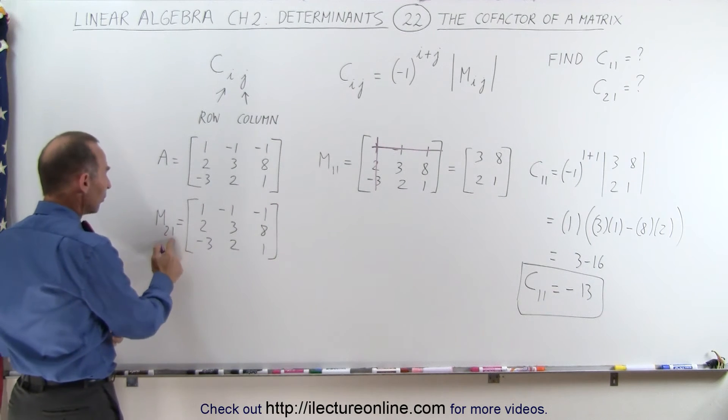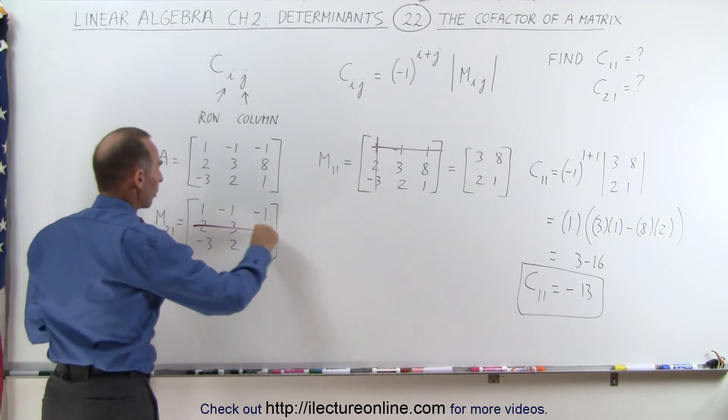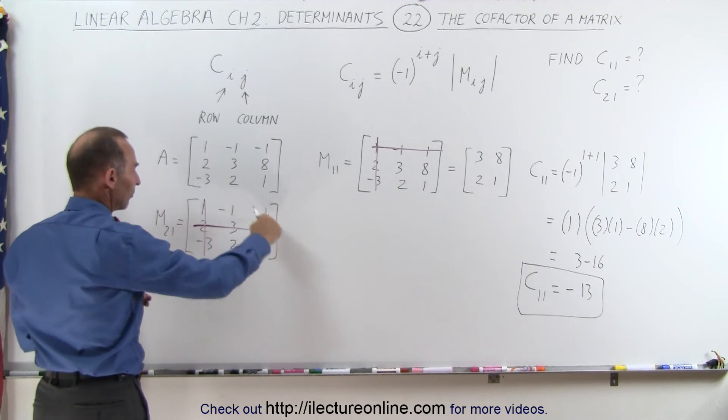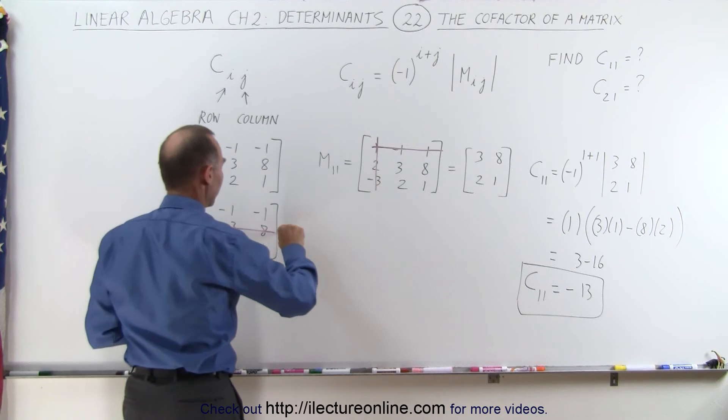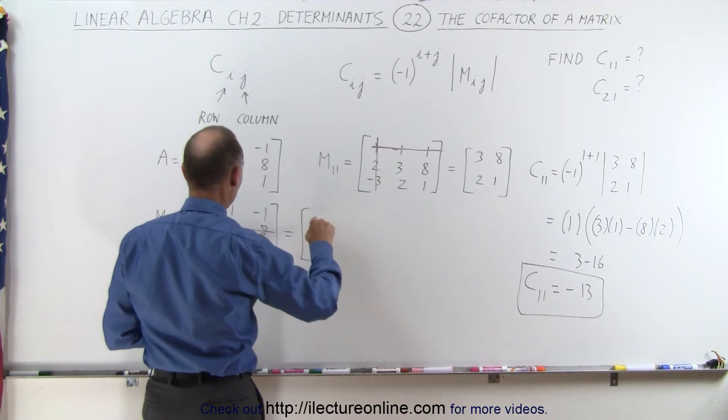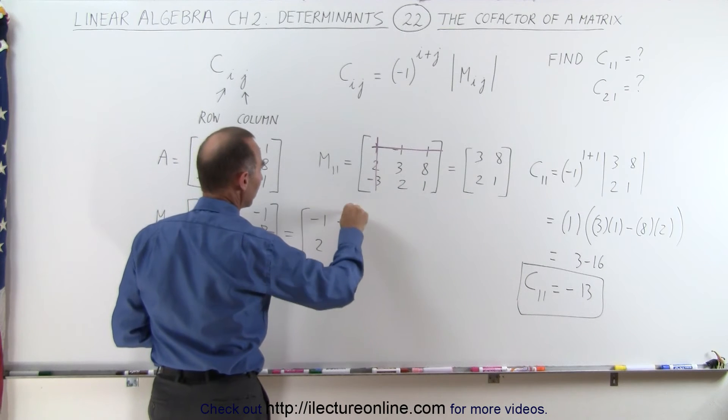Let's get rid of the second row and the first column, second row, first column, you're left with these four elements, which means that the minor matrix will now look like this: minus 1, minus 1, 2, and 1.